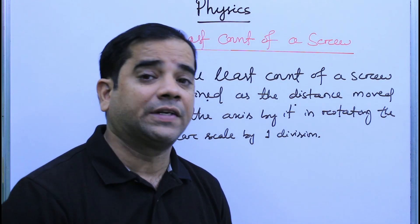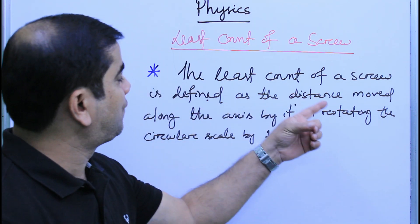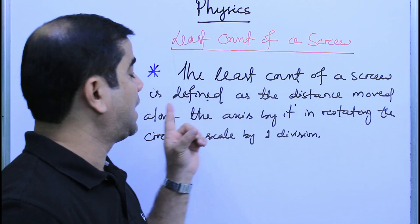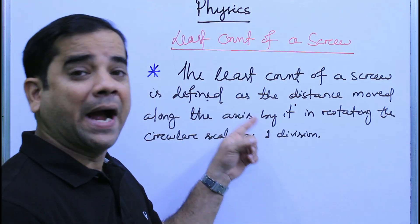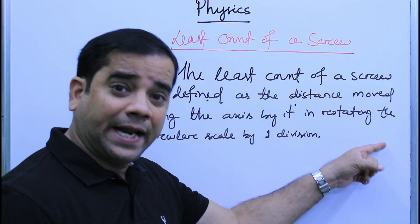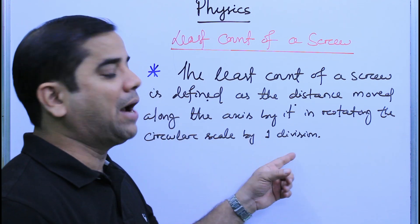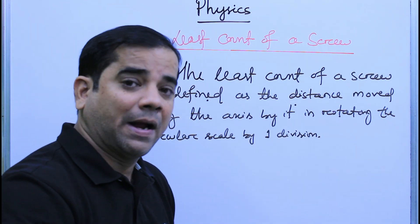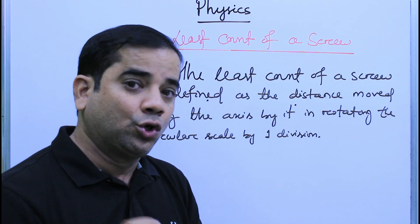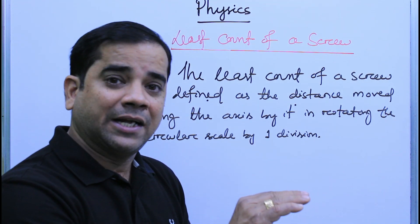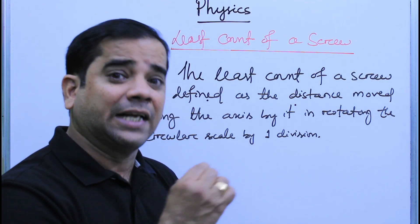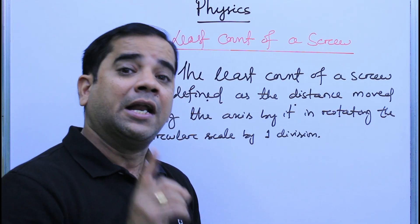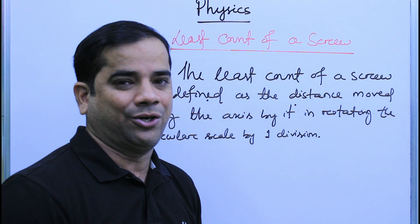The least count of a screw is defined as the distance moved along the axis when the circular scale is rotated by one division. When we rotate the circular scale by one division, the screw moves along the axis, and the distance traveled by that particular movement is nothing but the least count of the screw.